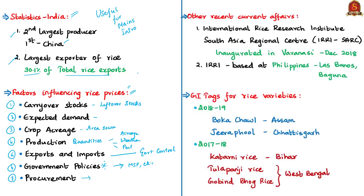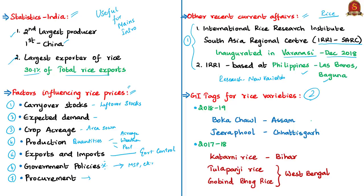Recent current affairs related to rice: the International Rice Research Institute South Asia Regional Centre, called IRRI SARC, was inaugurated in Varanasi, India. Its headquarters is in Los Baños, Philippines, and it focuses on developing new varieties of rice. In 2018-19, two rice varieties received GI tag status: Boka Chawal from Assam and Jirashail (aromatic) from Chhattisgarh. In the previous financial year, three varieties received GI tags: Katarni rice from Bihar, and Tulaipanji and Gobindobhog rice from West Bengal.